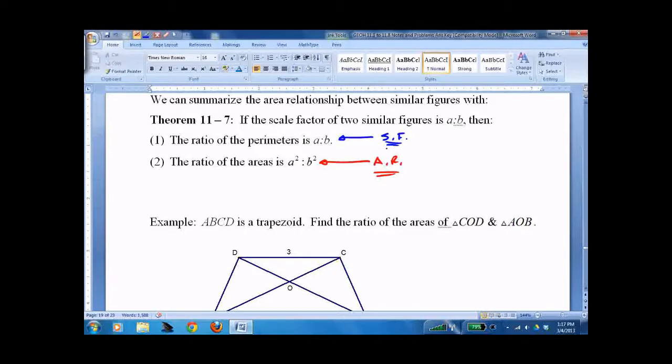That's it, just square it. If we have a scale factor of 2 to 5, then the area ratio is 4 over 25.